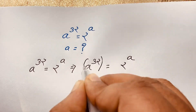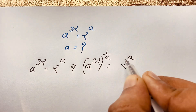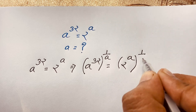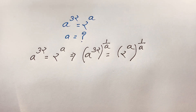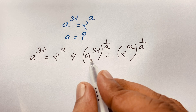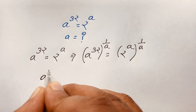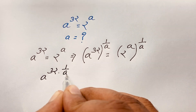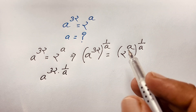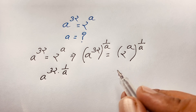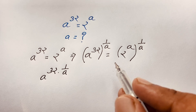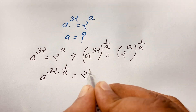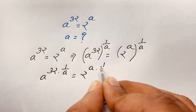I take both sides to the exponent 1 over a. Here the exponent is 1 over a. You can simplify this expression. It will be a to the power 32, and here is 1 over a. We know the exponent law: a to the power m, whole to the power n, equals a to the power mn. According to this law, it simplifies to: a to the power 1 over a is equal to 2 to the power a times 1 over a.